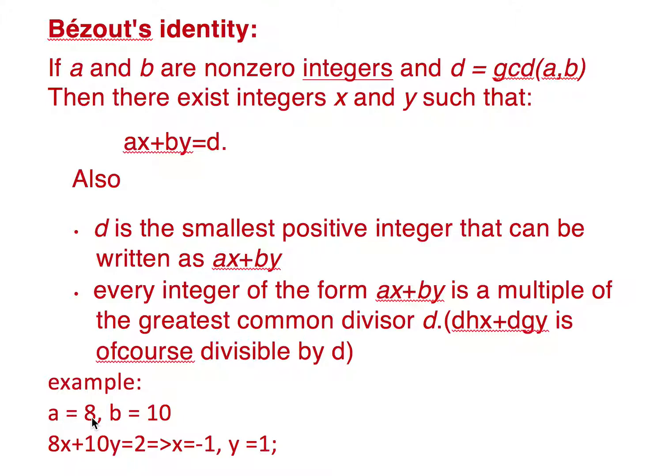Where a is equal to 8 and b is equal to 10. Their gcd of course is 2 because 2 divides 8 and 2 times 5 divides 10. It is the greatest number which divides both of them.